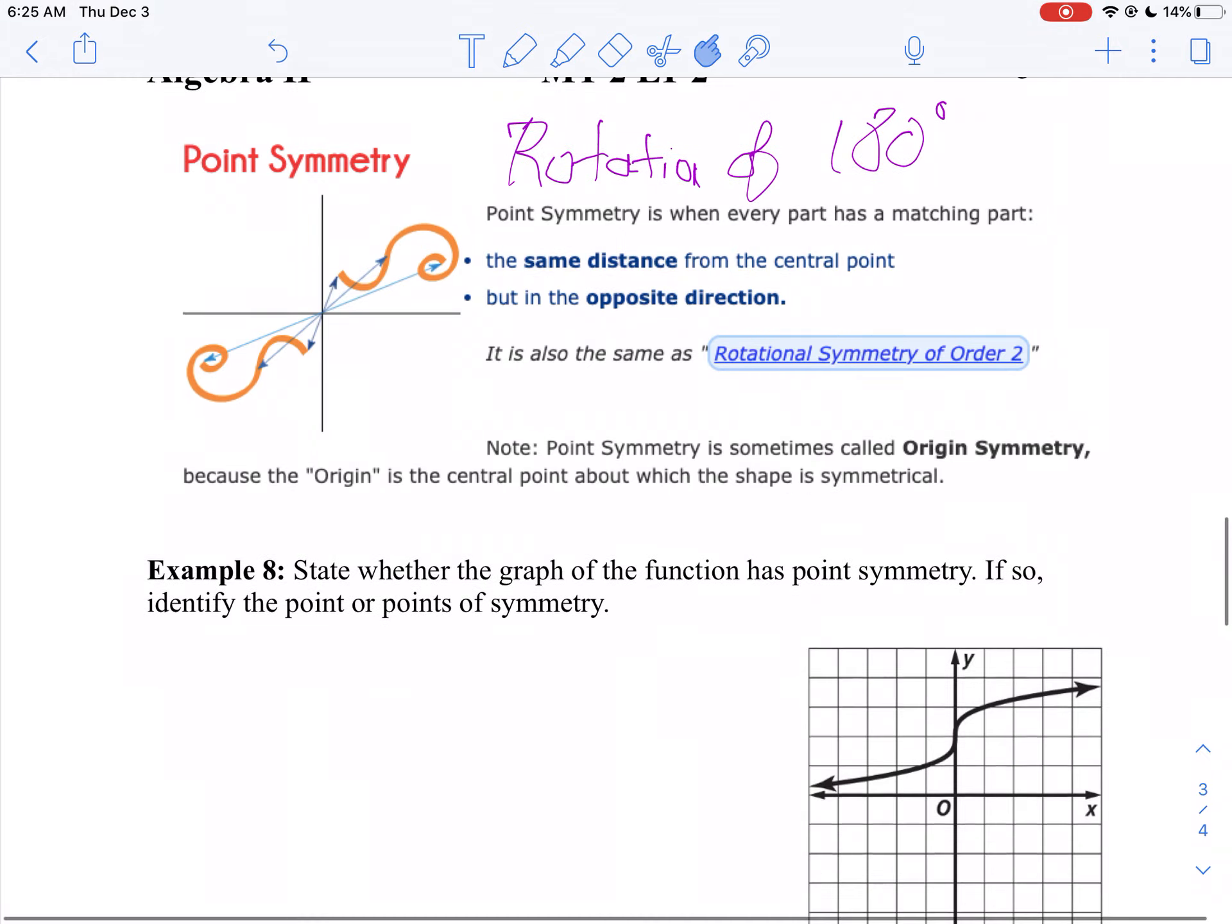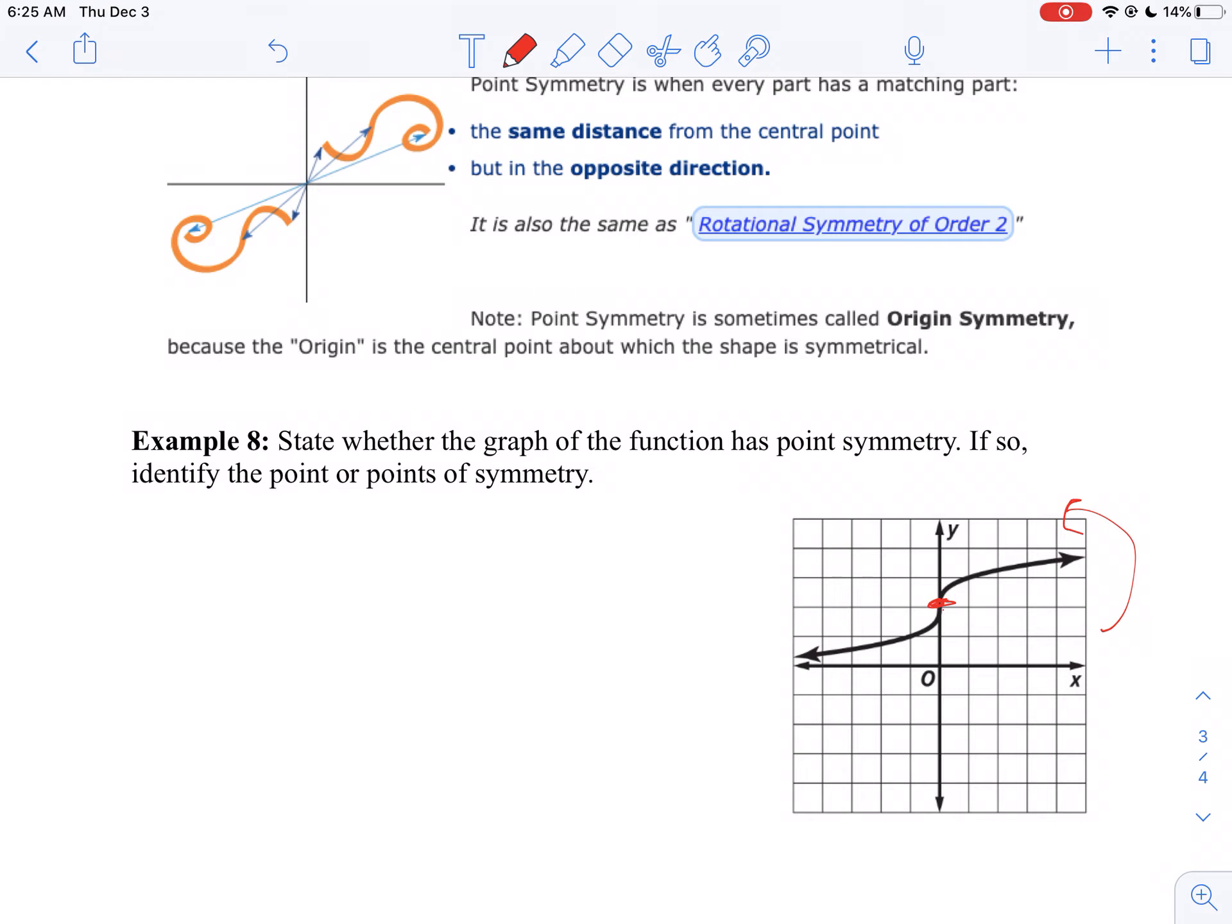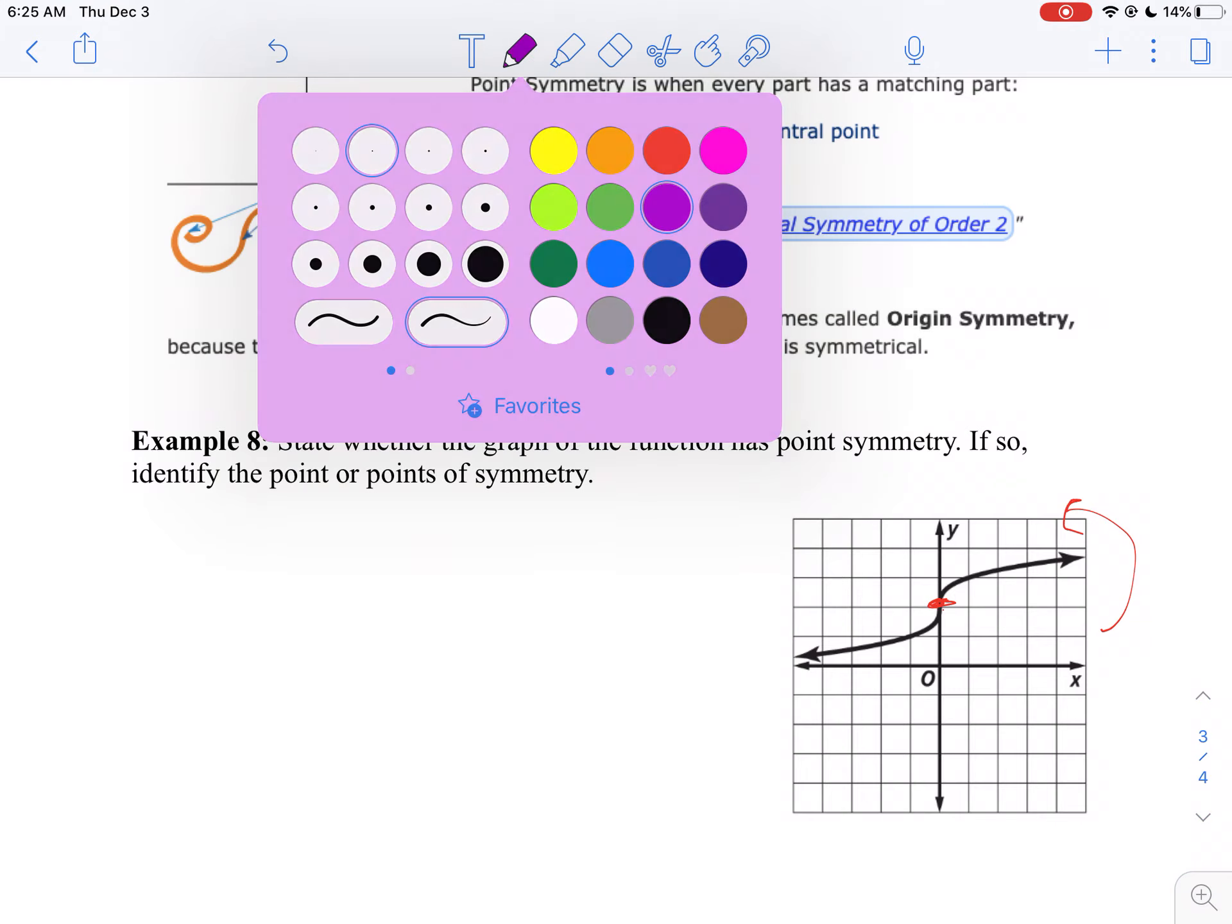Do you see it? At zero and two, this point right here, if I rotate it 180 degrees, it would match up perfectly. So this has point symmetry.